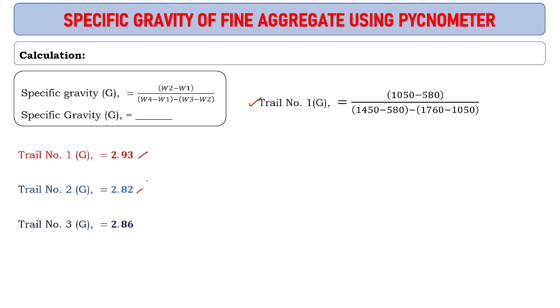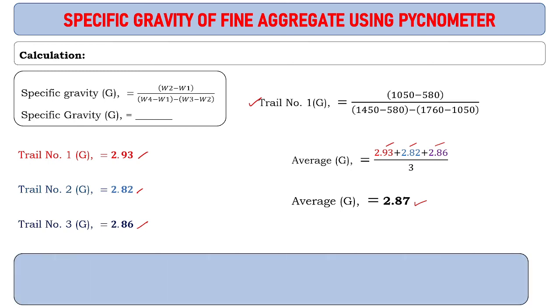Average specific gravity will be 2.93 plus 2.82 plus 2.86, all divided by three. We get the average specific gravity of fine aggregate as 2.87. Result: specific gravity of fine aggregate is 2.87. This is the specific gravity of fine aggregate using the pycnometer. Thank you.